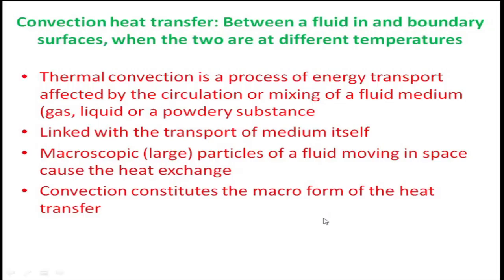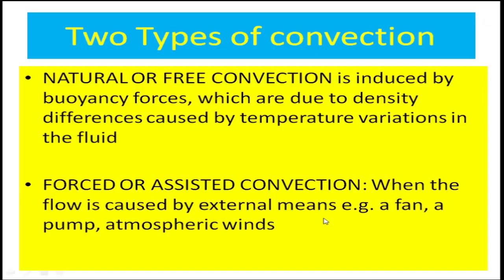Coming on to convection: there are two types — natural or free convection, and forced or assisted convection. In natural or free convection, buoyant forces induce the movement of the fluid. In forced convection, external means such as a fan, a pump, or atmospheric winds induce the movement.